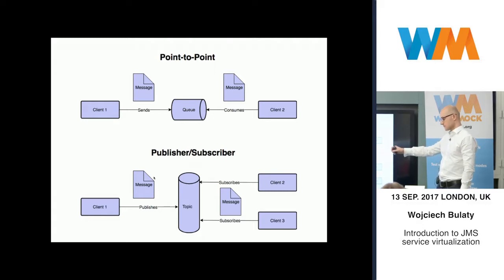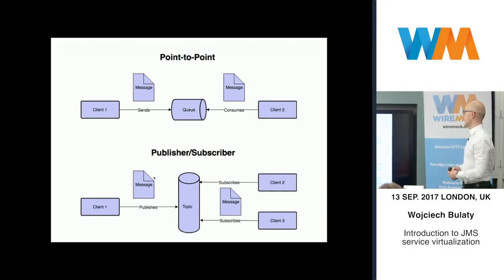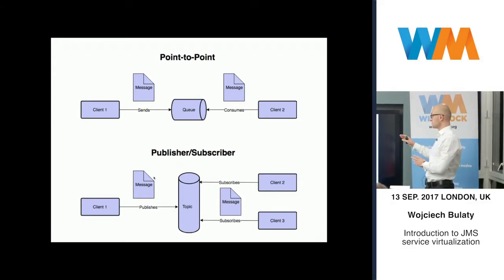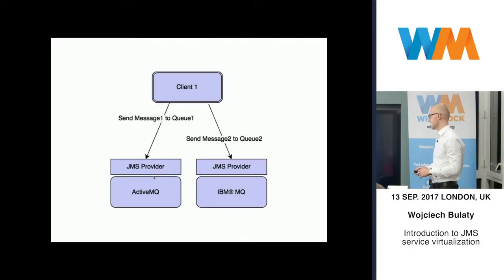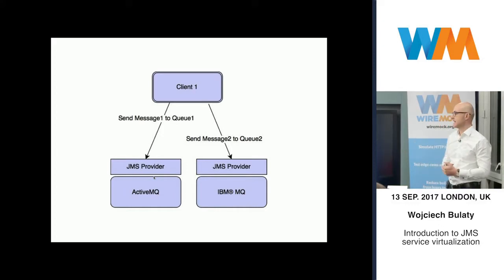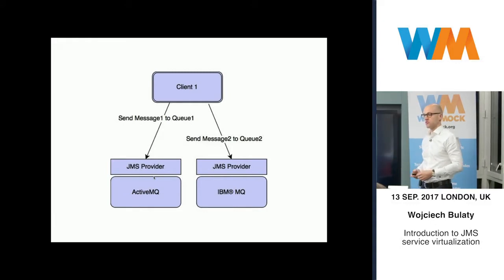We also have publisher-subscriber, so topics. A client publishes messages to a topic and we have one or more subscribers to the topic consuming those messages. The difference here is that there is a time dependency — you can only see messages that have been published after you have subscribed. Also worth noting: JMS is only an API, so there are many implementations, for example ActiveMQ, IBM MQ, and many others, which provide a JMS API on top.